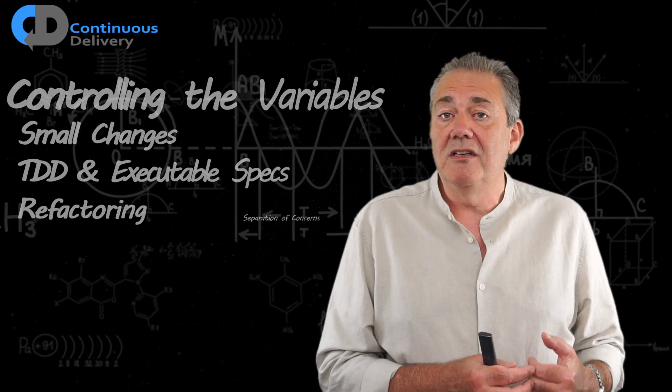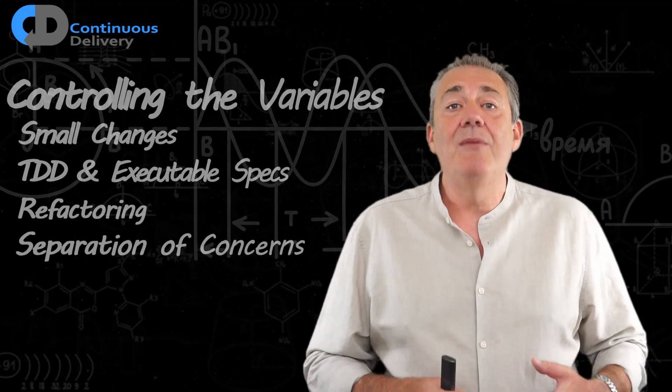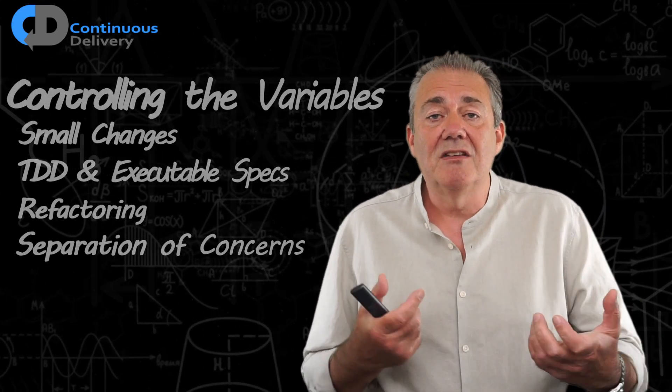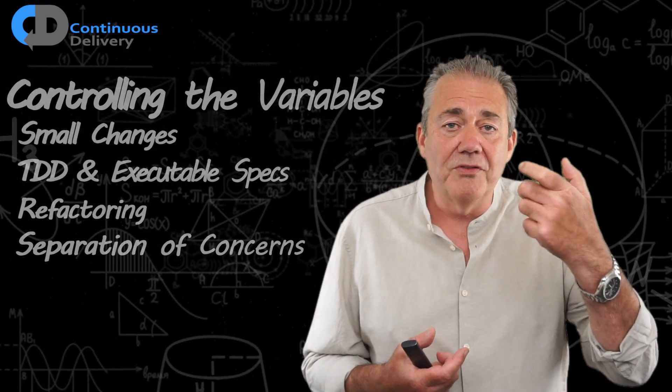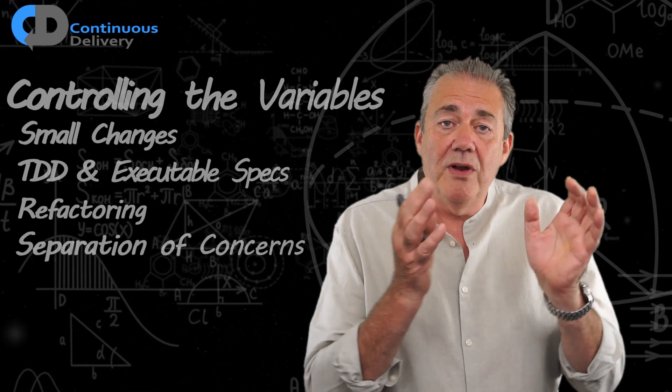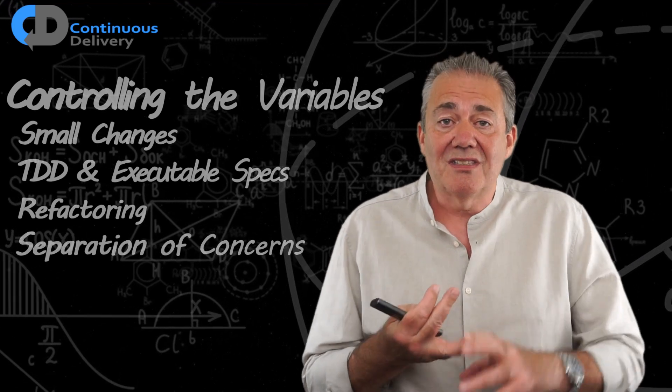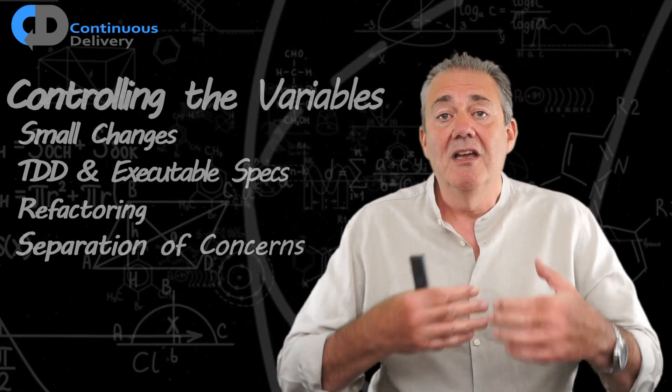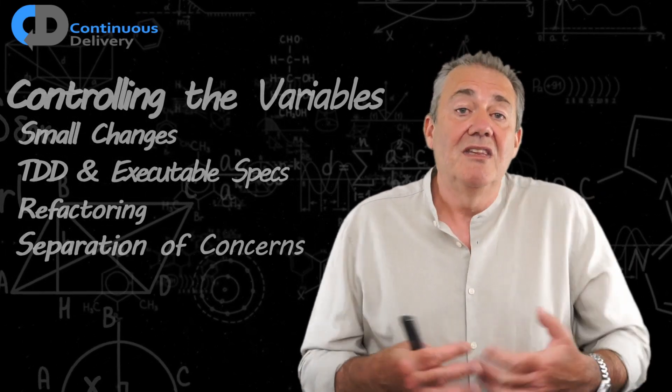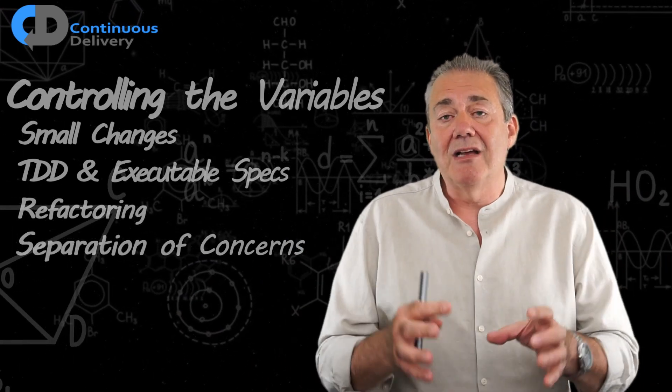This gets into the next idea on my list: separation of concerns. This is a great technique for enabling our ability to refactor. If we design our code so that each piece is focused on solving just one problem—one class, one thing; one method, one thing—if we focus our designs down in that way, one, it makes them eminently testable. But secondly, it means we can refactor safely behind the interfaces that these pieces of code present to the outside world. This is good design. It makes our code more deterministic and allows us to work in a more disciplined way.